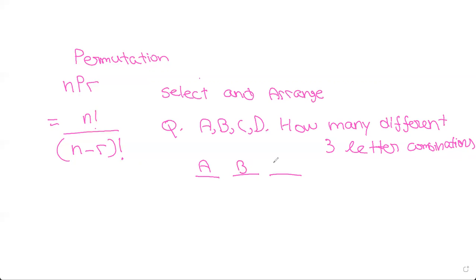For example, you can do A, B, C, and then A, C, B, etc. So you select three letters from this and you can arrange it in different orders, right? So you use permutation.